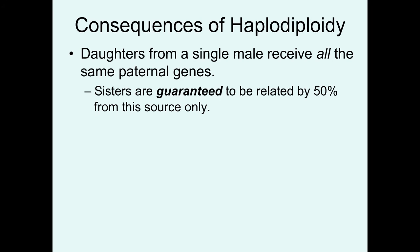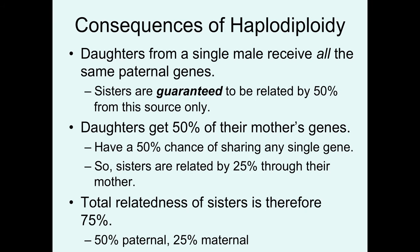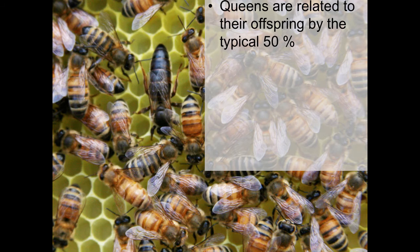Daughters from a single male will receive all of the same paternal genes. Since all sperm are genetically the same, sisters are guaranteed to be related by 50% simply from dad's genes — they share all of dad's genes, which represent half of their genetic makeup since they're diploid females. Daughters get the remaining 50% of their genes from their mother, but because they have a 50% chance of sharing any single maternal gene, 50% of 50% is 25%. So sisters are related to each other through mom by 25%, making their total relatedness 75% — 50% from paternal genes and 25% on average from maternal genes.